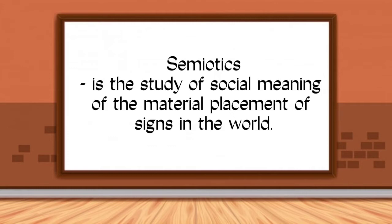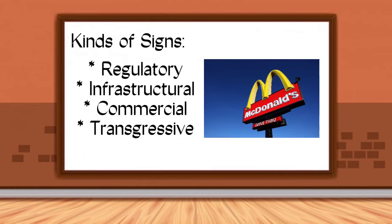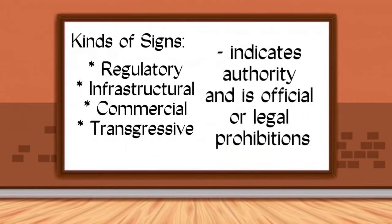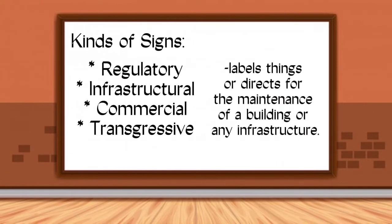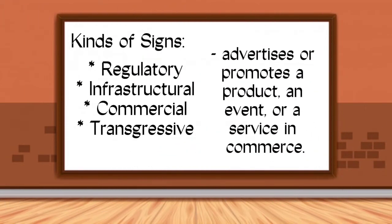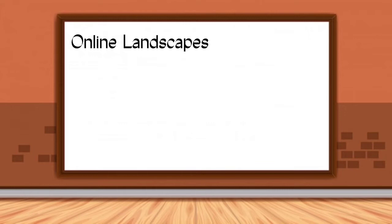There are four kinds of signs: regulatory, infrastructural, commercial, and transgressive. Regulatory indicates authority and its official or legal prohibitions. Infrastructural labels things or directs for the maintenance of a building or any infrastructure. Commercial advertises or promotes a product, an event, or a service. Lastly, transgressive signs violate — intentionally or accidentally — conventional semiotics, or are in the wrong place, like graffiti.